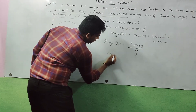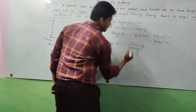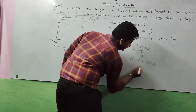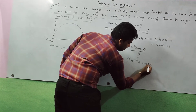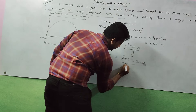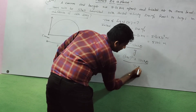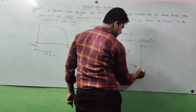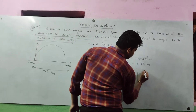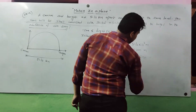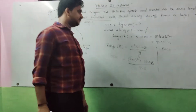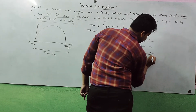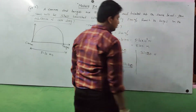Substituting values: 5100 = (240)² × sin2θ / 9.8. From this, we can solve for sin2θ. Computing the right-hand side gives sin2θ = 0.86.